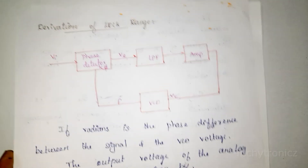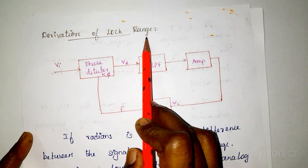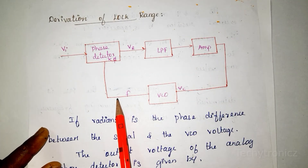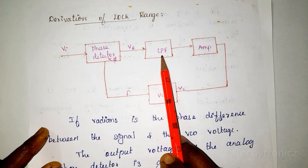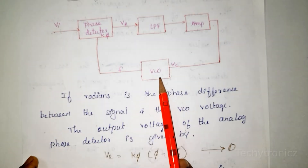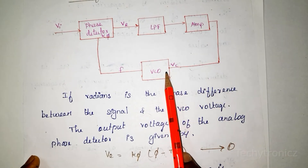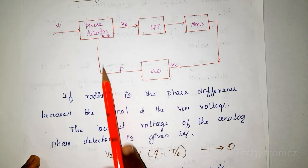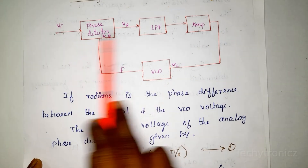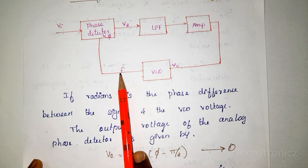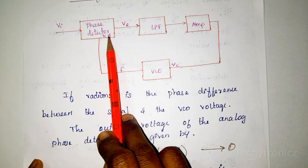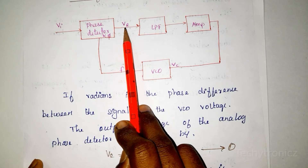Now we will see the derivation of lock range and capture range. We take the loop diagram: phase detector output is given to the low pass filter, then to the amplifier, and we get the VCO. The control voltage is given to the VCO, and the VCO frequency is fed back to the phase detector. The output of the analog phase detector is the error voltage VE.